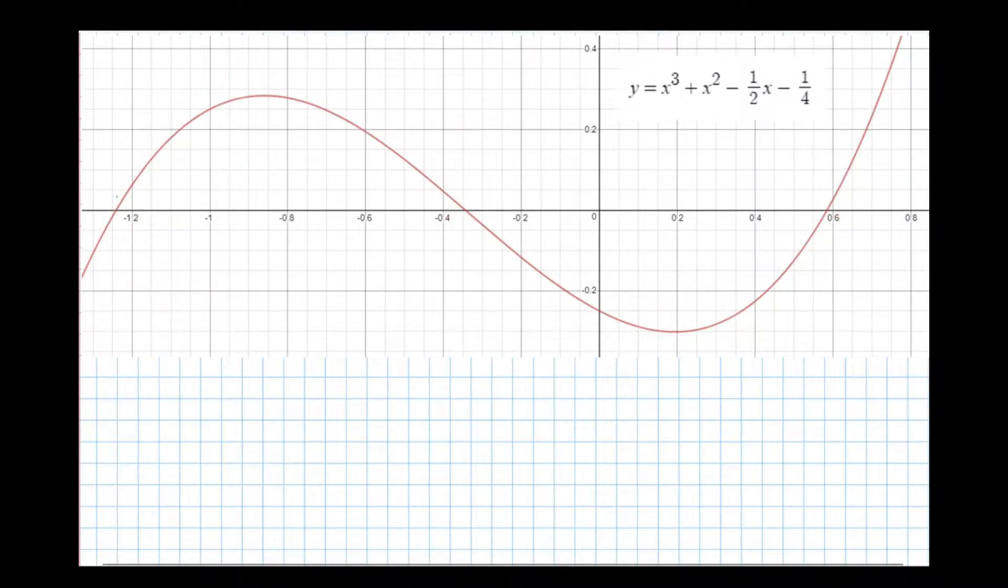So what the Newton-Raphson method does, it takes a start point on the curve and then draws a tangent at that point. Let's say our start point is here at minus 0.6. Then, at that point, we draw a tangent.